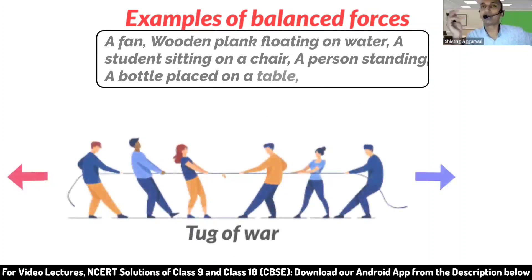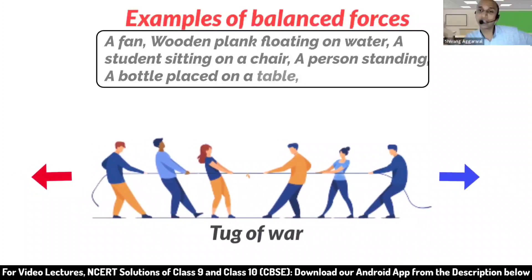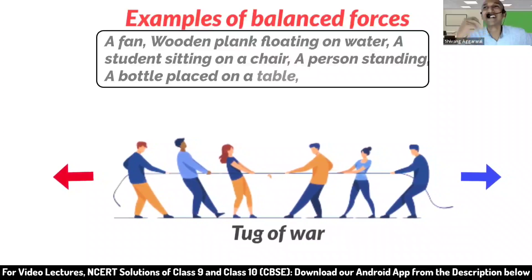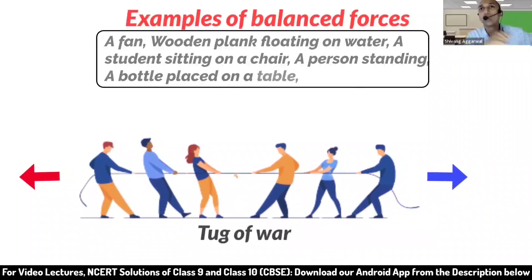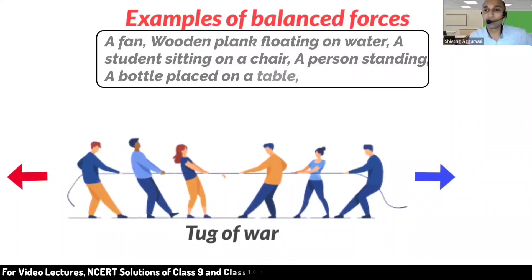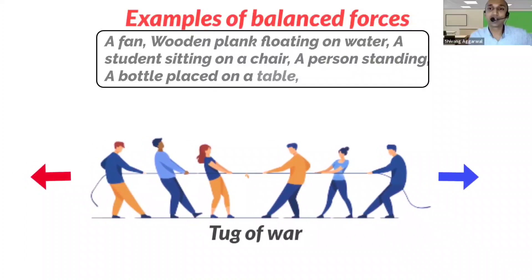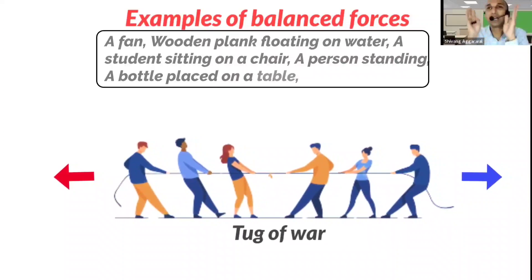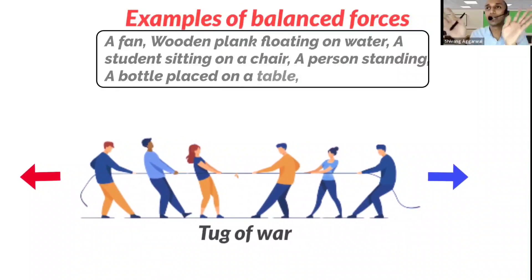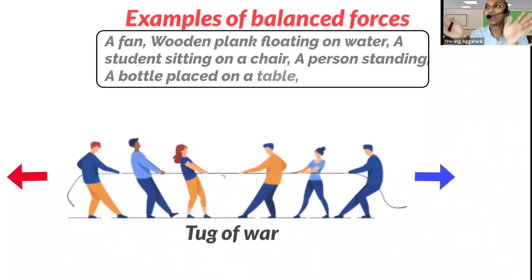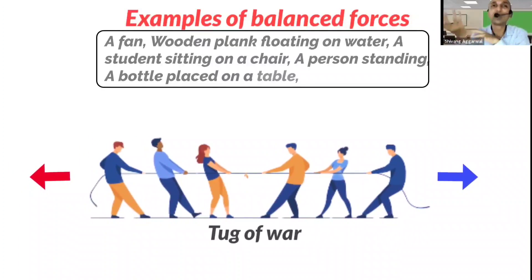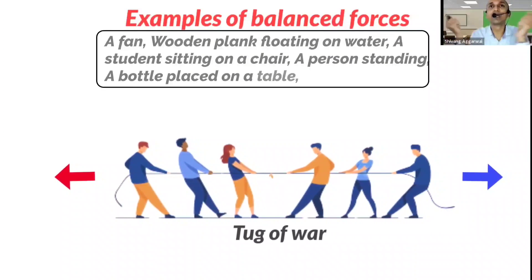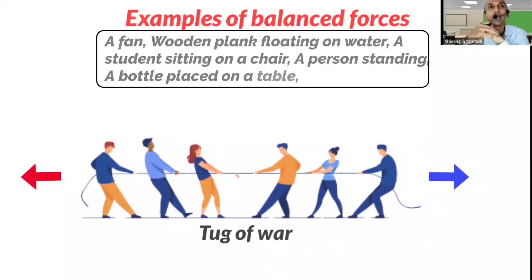Next example: a tug of war. The rope — one side pulls. In a tug of war, both sides pull the rope. Are both sides pulling equally or unequally? Both sides pull with an equal force — so that is an example of balanced forces.